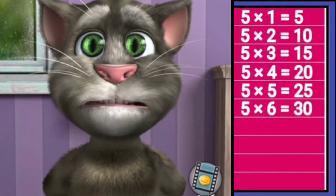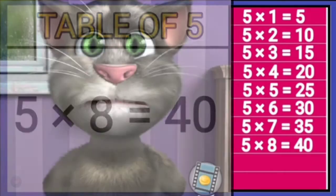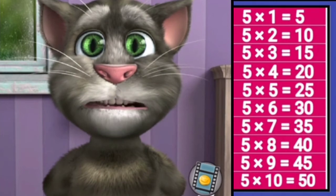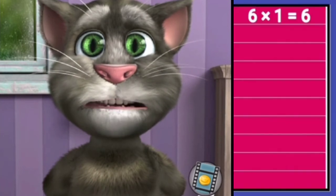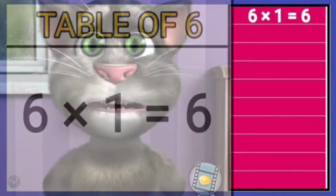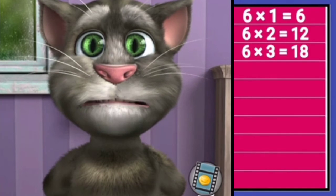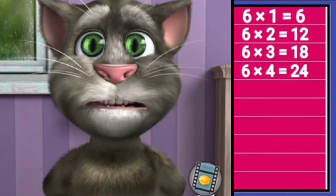Five sixes is thirty, five sevens is thirty-five, five eights is forty, five nines is forty-five, five tens is fifty.